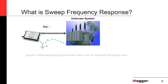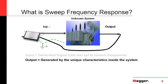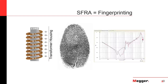With frequency response analysis, we have an unknown system — your transformer. All we're doing is putting a signal through various parts of the windings and measuring the output on a corresponding secondary. Looking at output over input, we get a response for that transformer. The transformer, viewed as an RLC circuit, is unique in its design — basically every large power transformer is a custom design and will come out with its own unique fingerprint.